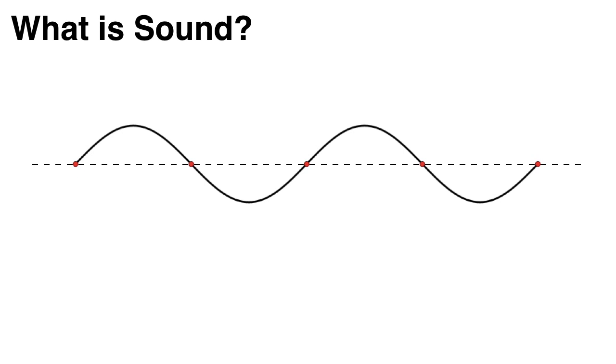These waves are visible with our eyes and have a number of properties. They have a maximum point called a crest and a minimum point called a trough.